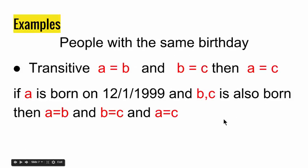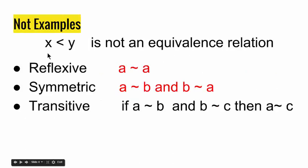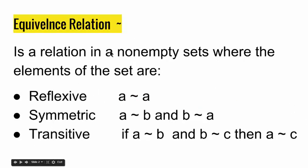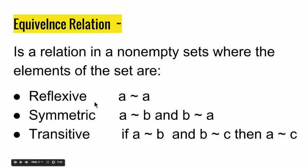To recap: people with the same birthday is an equivalence relation. X being smaller than Y is not an equivalence relation because it lacks reflexivity and symmetry. People in love is not an equivalence relation because it is reflexive but not symmetric and transitive. An equivalence relation is a relation in a non-empty set where elements are reflexive, symmetric, and transitive. If all three properties exist, equivalence relation exists. If even one does not exist, equivalence relation does not exist.